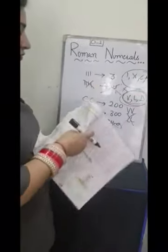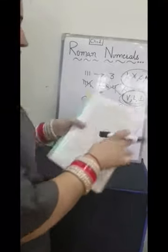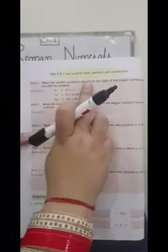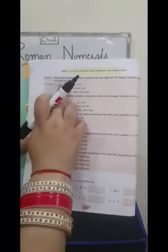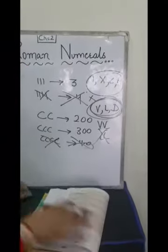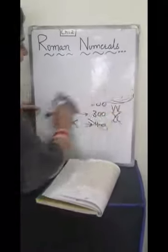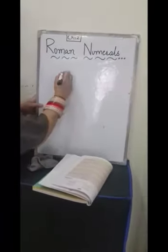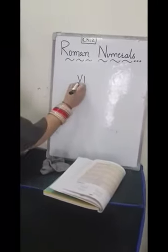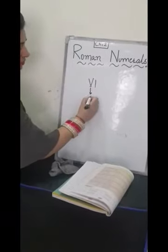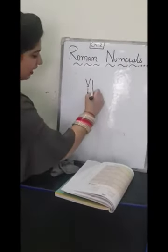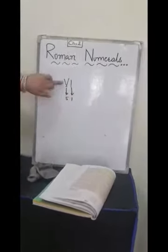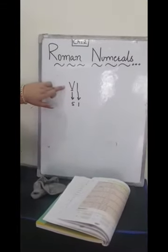Now third rule: When the smaller symbol is placed on the right of the bigger symbol, then we will add the symbol. See, if I am writing V, I. We all know V stands for 5 and I stands for 1. Which one is bigger? V.